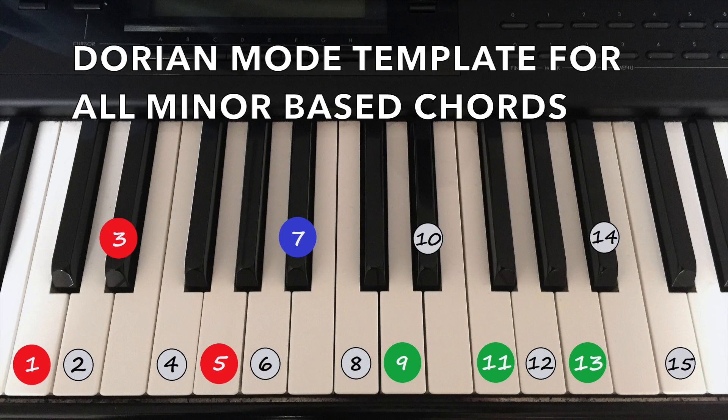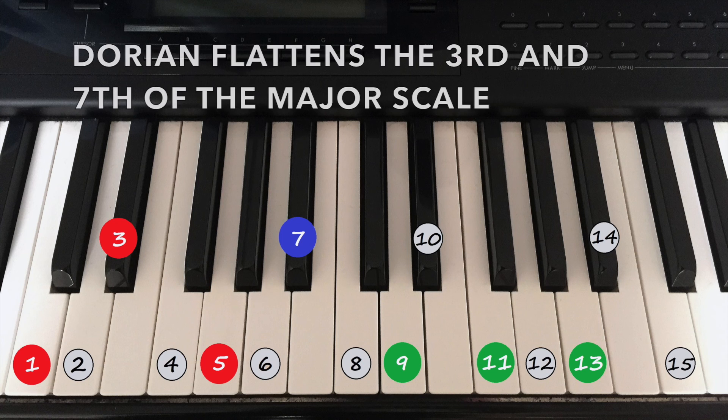The Dorian mode acts as a template for all unaltered minor bass chords. The minor triad is in red, while the triad's extensions are in blue and green. Dorian can be viewed as a major scale, but with the 3rd and 7th scale tones flattened.